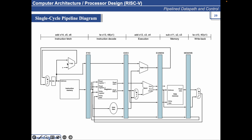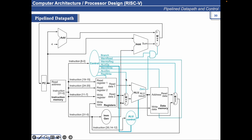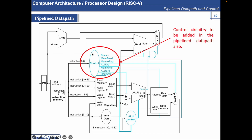There is one thing that is missing in this pipeline architecture, and that is the control circuitry. We need to have the control signals asserted for each instruction depending on what instruction is being executed. So if you look at the single cycle diagram, the control circuitry takes the input instruction and, depending on what type of instruction it is, it generates the corresponding control signal. So control circuitry has to be added.